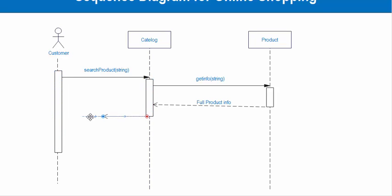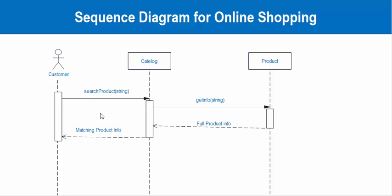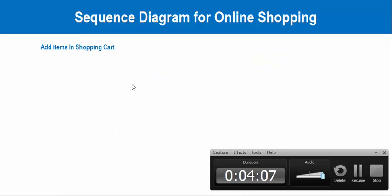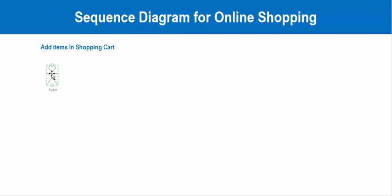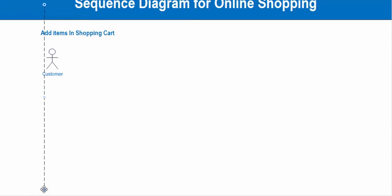A return message will come back to the customer. So this was the sequence diagram for searching catalog. Now we will create the sequence diagram for add items to the shopping cart. Here we will draw the customer and draw the lifeline for our customer.